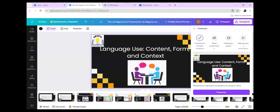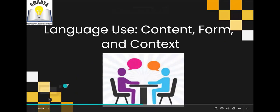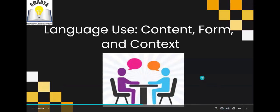Now we are going to work on another important aspect of oral interaction — language use. When evaluating oral interaction, we consider important characteristics. For example, the language use depends on content, context, and form. Depending on that, we also set our criteria for evaluation.